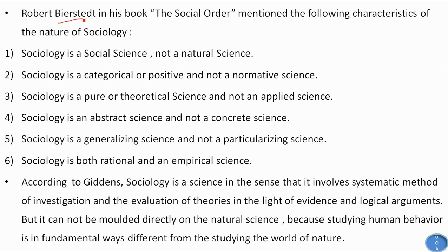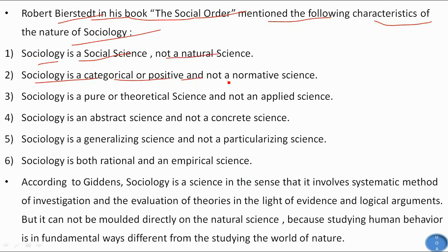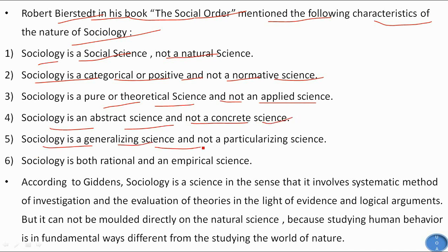Robert Bierstedt in his book 'The Social Order' mentioned the following characteristics of the nature of sociology: sociology is a social science, not a natural science; it is categorical or positive, not a normative science; it is pure or theoretical, not an applied science; it is an abstract science, not a concrete science; it is a generalizing science, not a particularizing science; and it is both a rational and empirical science.